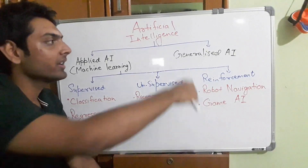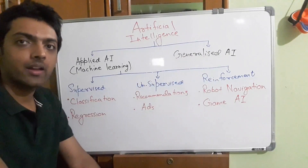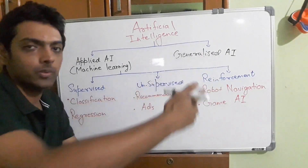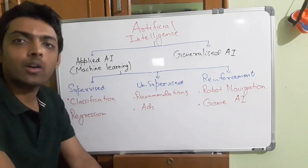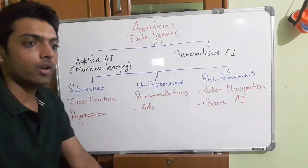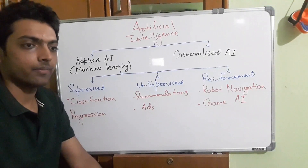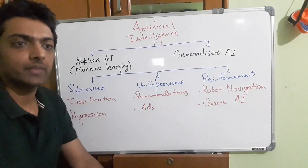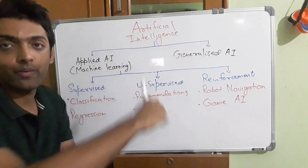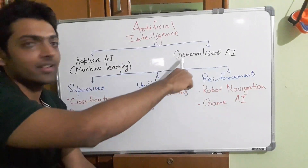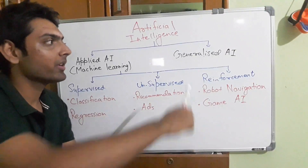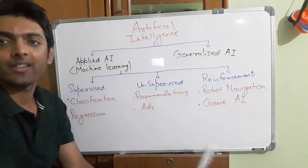Artificial intelligence actually has two segments. The first is applied AI, which we call machine learning. The other part is generalized AI. In generalized AI, we expect the neural network to understand the context of the data — the reasoning behind it, reading between the lines. This is the higher form of AI and is still in the research phase. We don't talk about it much because it is not industrial grade yet.